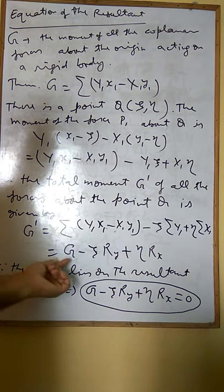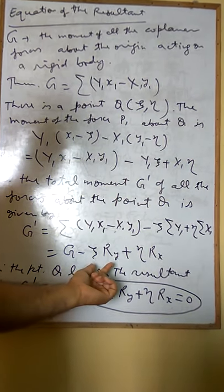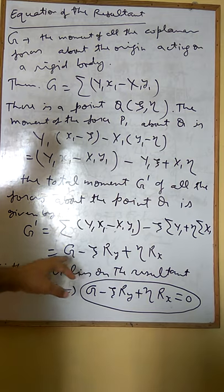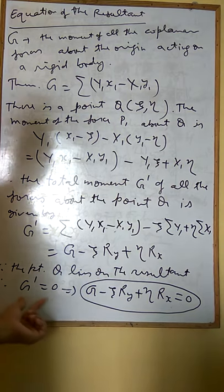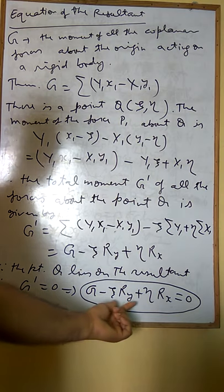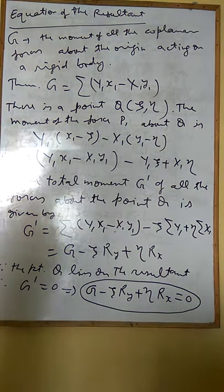In this case, G' will be zero since point Q lies on the resultant. It means G - ξRy + ηRx is equal to zero.